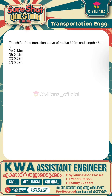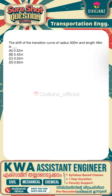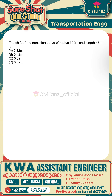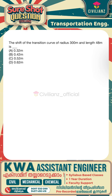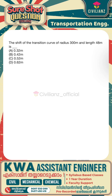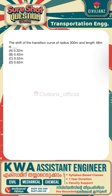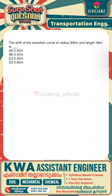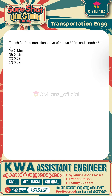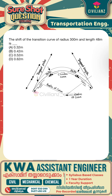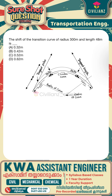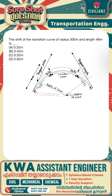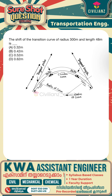The shift of the transition curve of radius 300m and length 48m is: Option A: 0.32m, Option B: 0.42m, Option C: 0.52m, Option D: 0.62m. On a straight road, a circular curve will be smooth — energy is needed to provide a transition curve.